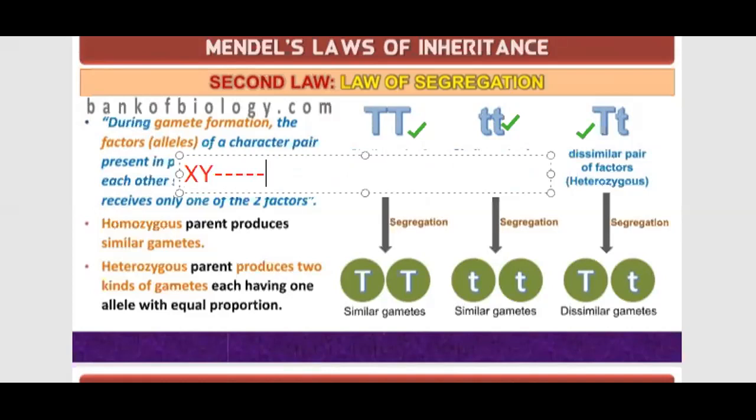When we make sperm, there are X and there are Y. During sperm formation or gamete formation, these pairs are separated.